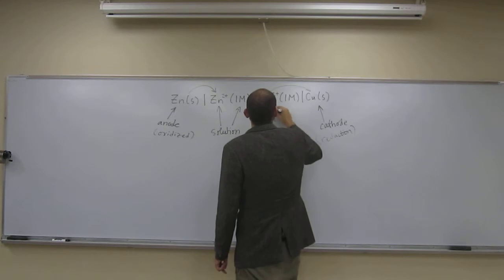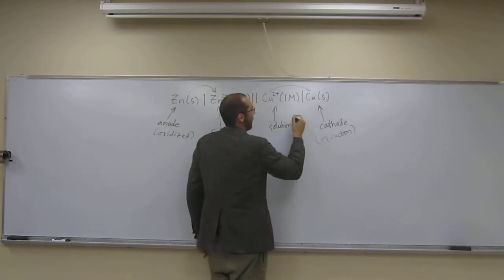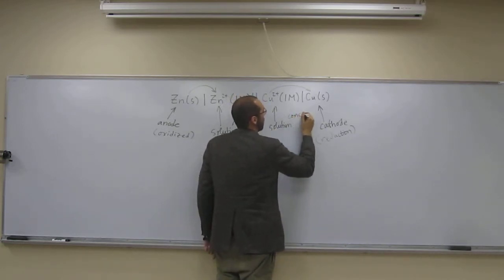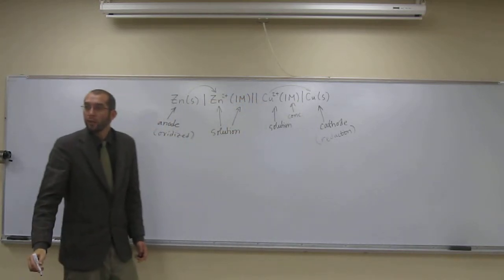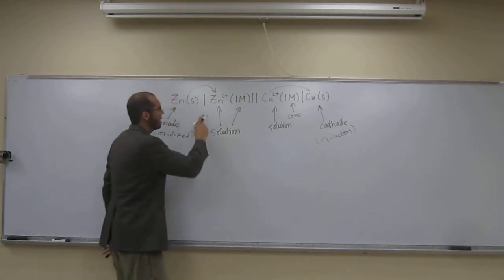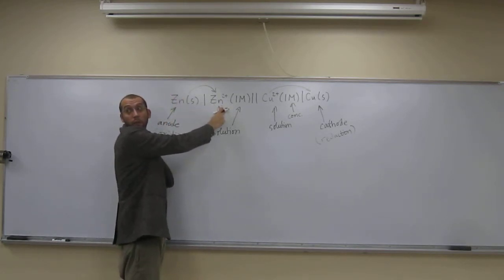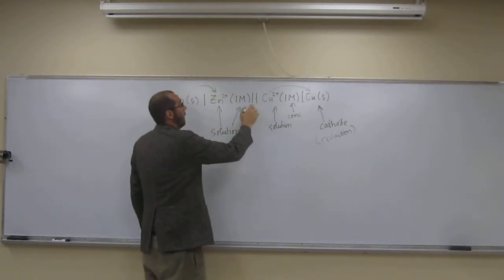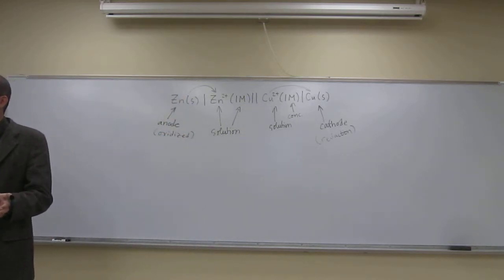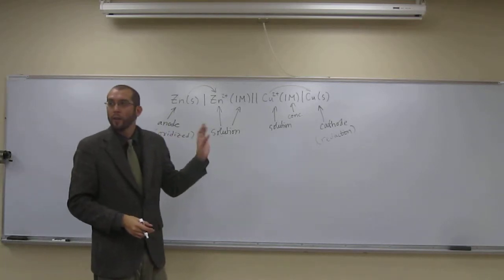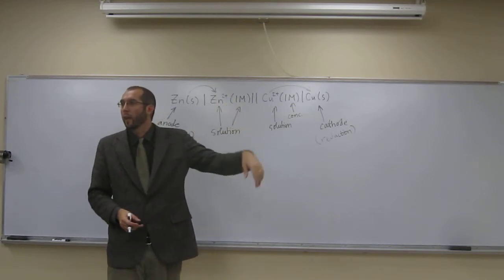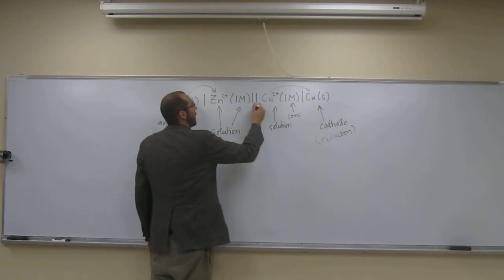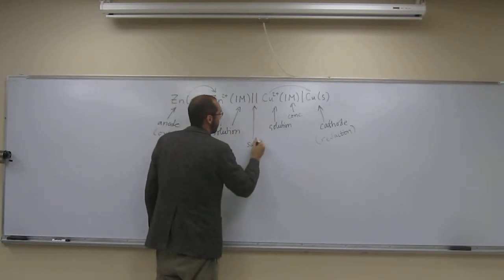This is the solution that the cathode's in, and this is the concentration of that solution. This line is saying there's an anode in this solution. This line is saying there's a cathode in this solution. This double line indicates the break between the two solutions. We put a salt bridge in between those to counterbalance the loss of electrons from one side and the gain of electrons to the other. So this is just indicating that this is a salt bridge.